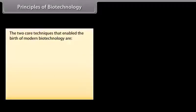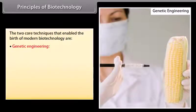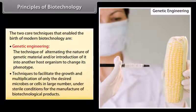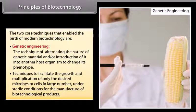The two core techniques that enable the birth of modern biotechnology are genetic engineering - the technique of altering the nature of genetic material and or introduction of it into another host organism to change its phenotype. Techniques to facilitate the growth and multiplication of only the desired microbes or cells in large number under sterile conditions for the manufacture of biotechnological products.